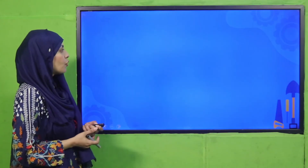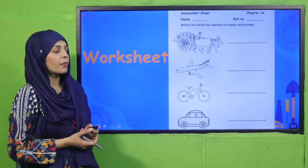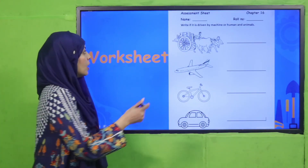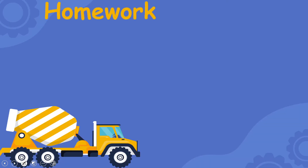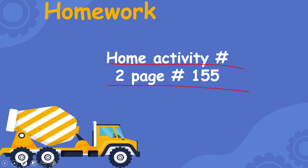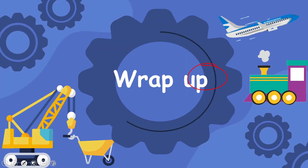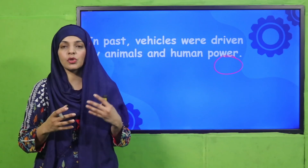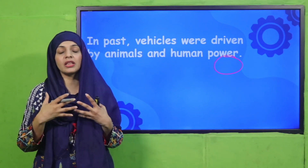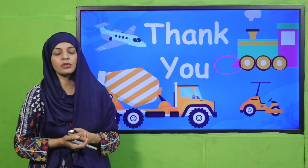For practice, you can download the worksheet from the description box below this video or get it from your teacher. Write whether each vehicle is driven by machine or by human and animal. For homework, do home activity number two on page number 155. Today we compared past transportation with modern transportation and discussed how technology has changed over time. I hope you enjoyed today's lecture — keep everyone around you safe, have a good day, thank you so much.